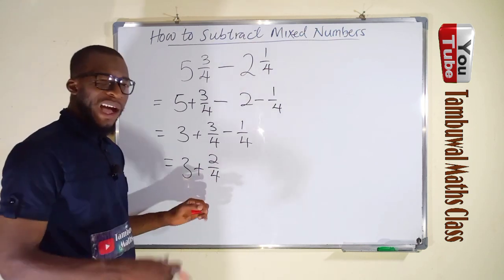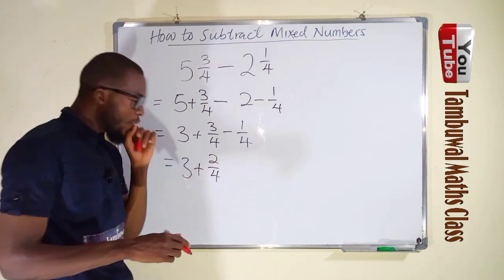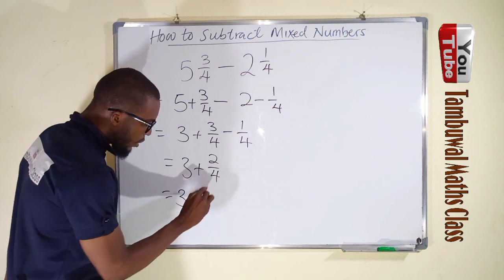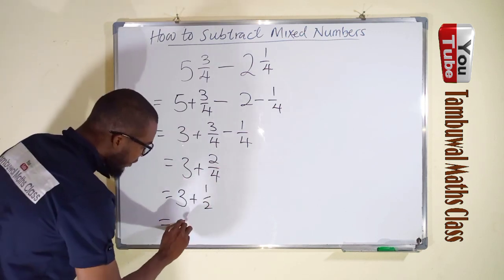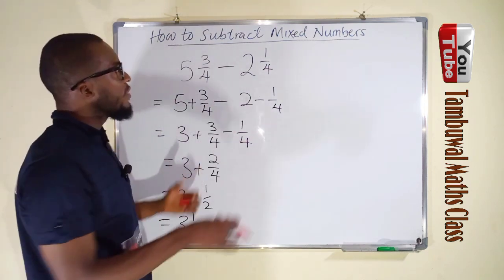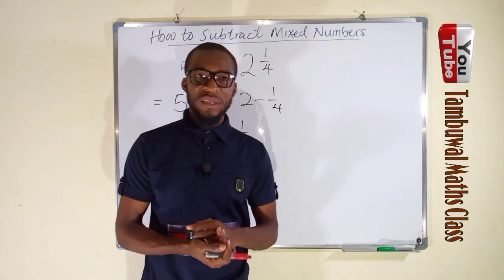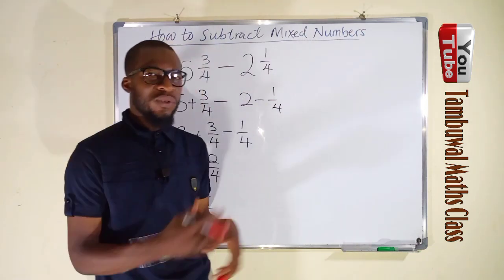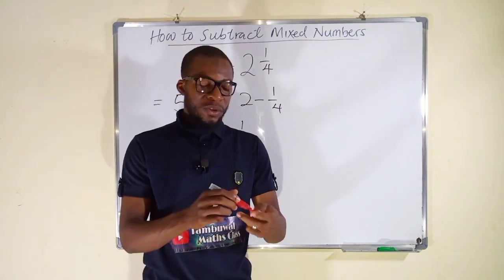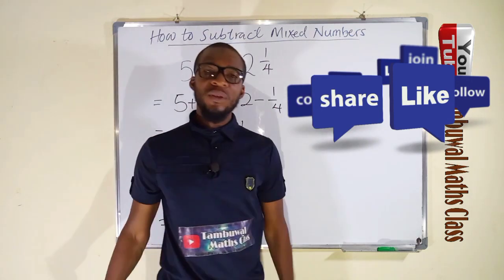The fraction 2/4 has a common factor of 2: 2 goes into 2 once, and 2 goes into 4 twice, reducing it to 1/2. So we have 3 plus 1/2, and our final answer is 3 and 1/2. Throughout all these exercises we have not converted our mixed numbers into improper fractions, because we already know how to subtract fractions directly. Don't forget to subscribe to my channel and share with your friends and colleagues. Thank you for watching, have a nice day.